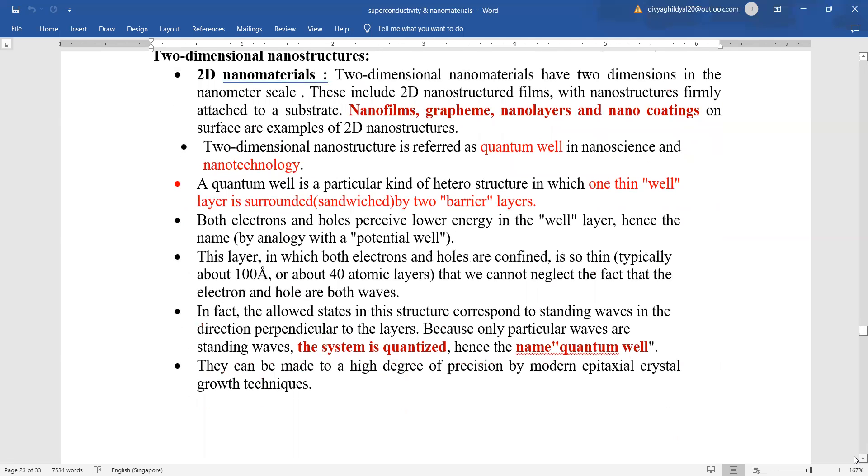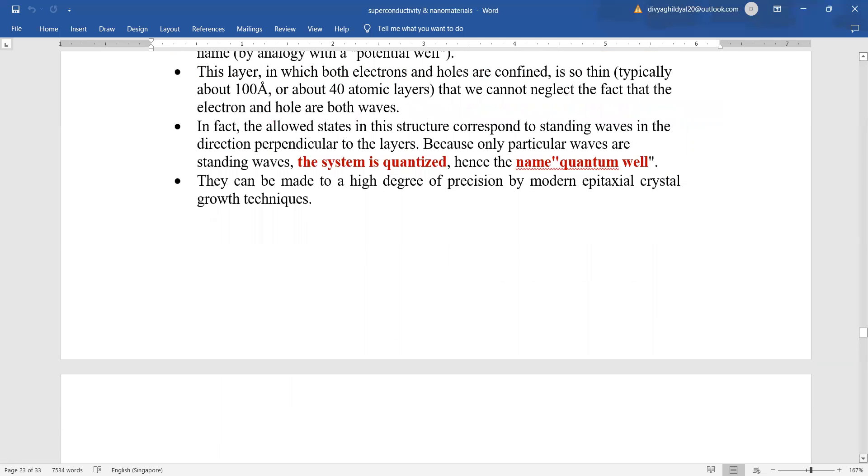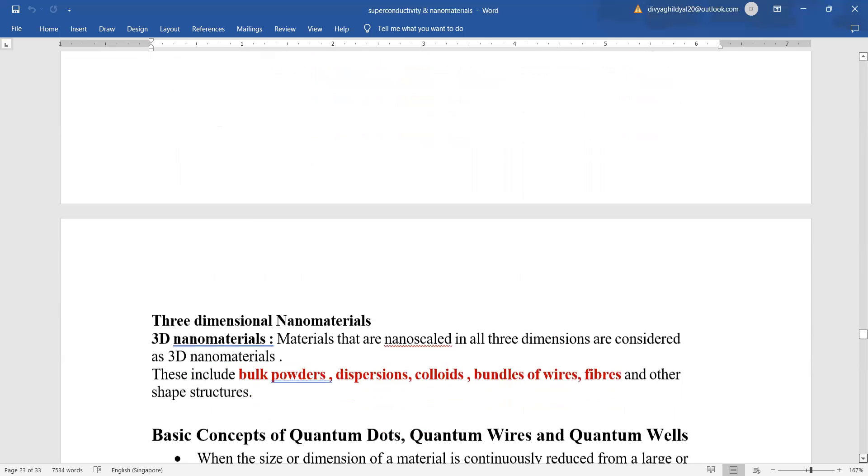Two-dimensional nanowires have dimensions in nanometer scale including graphene, nanolayers, nanocoatings, etc. Two-dimensional nanowires are referred to as quantum well in nanoscience. Quantum well is a particular kind of heterostructure in which one thin well layer is surrounded or sandwiched by two barrier layers. This layer in which both electrons and holes are confined is so thin that we cannot neglect the fact that electron and hole both are wave and this system is quantized. That means it is occurring in multiples, hence the name quantum well.